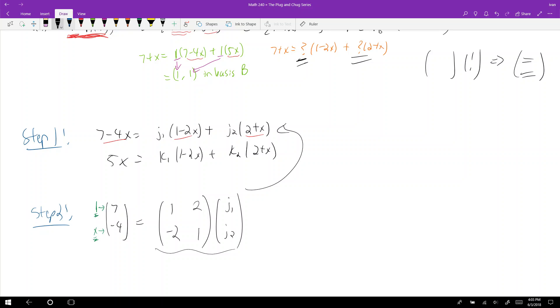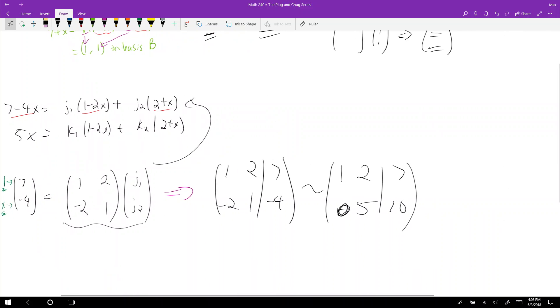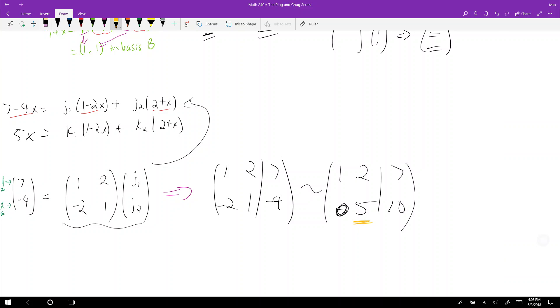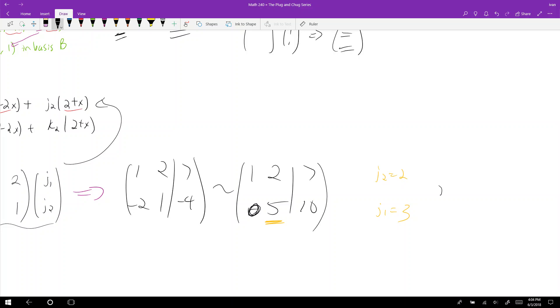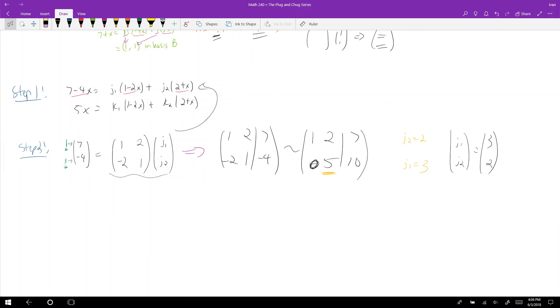So that means I have a system of equations. And so this, then, I want to solve for j1 and j2. So now I just do 1, 2, negative 2, 1, 7, negative 4. I have an augmented matrix and I'll reduce 1, 2, 0, 5, 7, 10. What'd I do? Bottom plus 2 times the top. And I can see here immediately that j2 is equal to 2. And then j1 must equal 3, then. So then j1, j2 is equal to 3, 2. Let's keep that in mind. j1, j2 is equal to 3, 2.